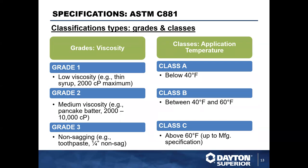Under C881 classification, Grade 1 is low viscosity, Grade 2 is medium viscosity — similar to pancake batter — and Grade 3 is non-sagging, almost a toothpaste-consistency material. Temperature classifications: Class A is below 40°F, Class B is 40–60°F, and Class C is 60°F and above.